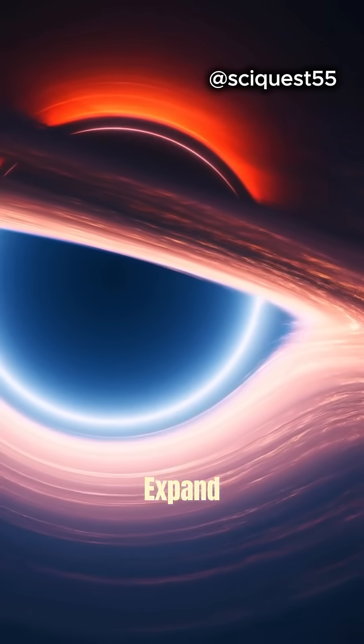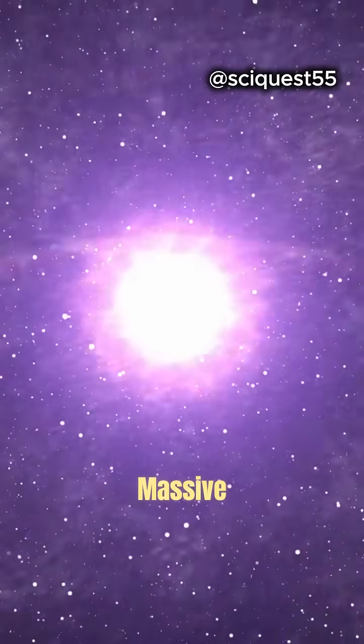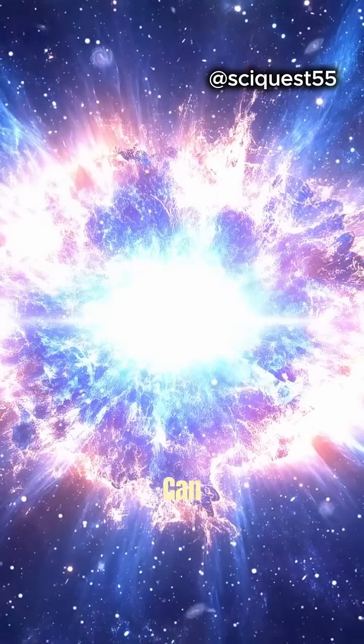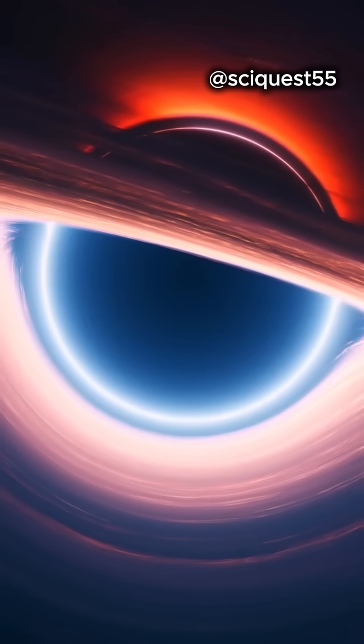Larger stars expand into red supergiants and may end their lives in a massive supernova explosion. The remnants of the supernova can form either a neutron star or a black hole.